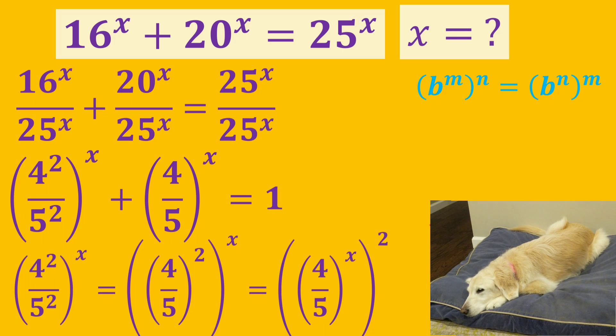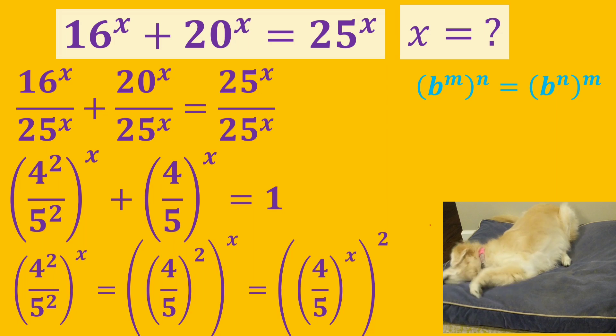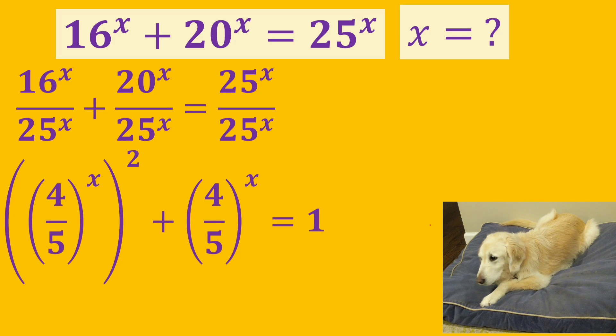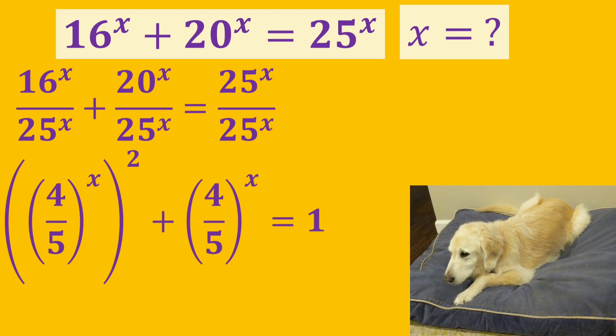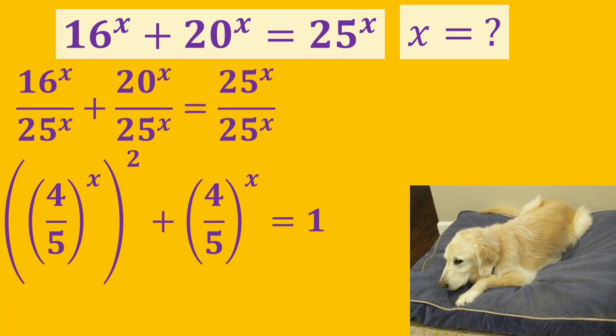As a rule, b to the power of m to the power of n is equal to b to the power of n to the power of m. So, 4 over 5 to the power of 2 to the power of x is equal to 4 over 5 to the power of x to the power of 2. So, 4 over 5 to the power of x to the power of 2 plus 4 over 5 to the power of x is equal to 1.